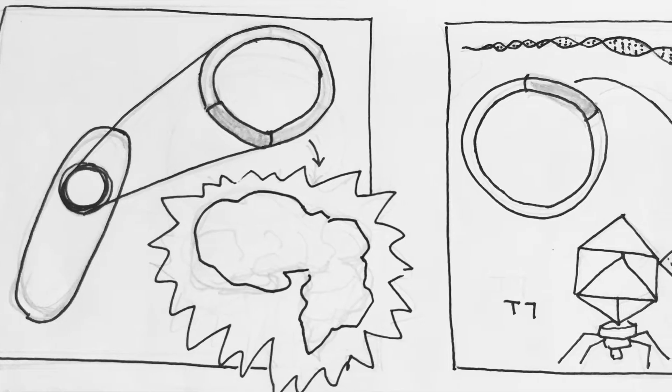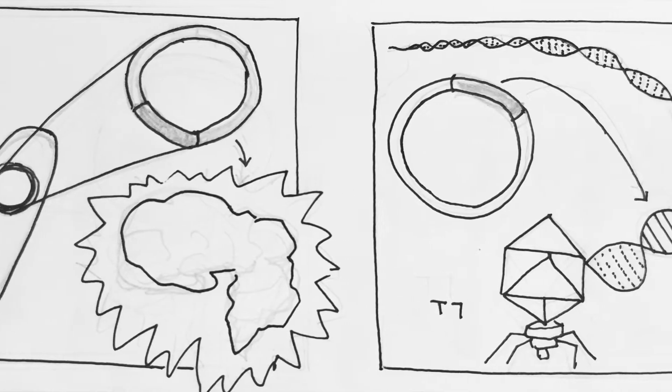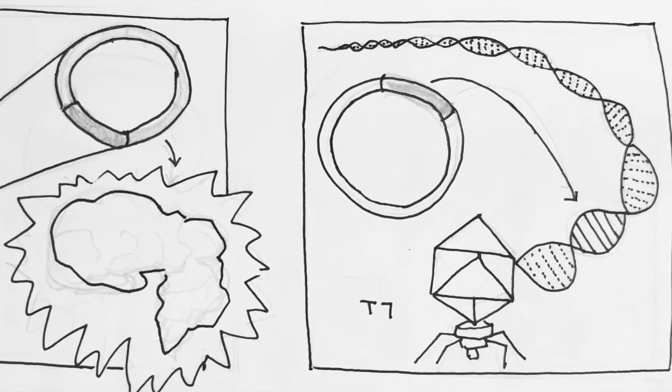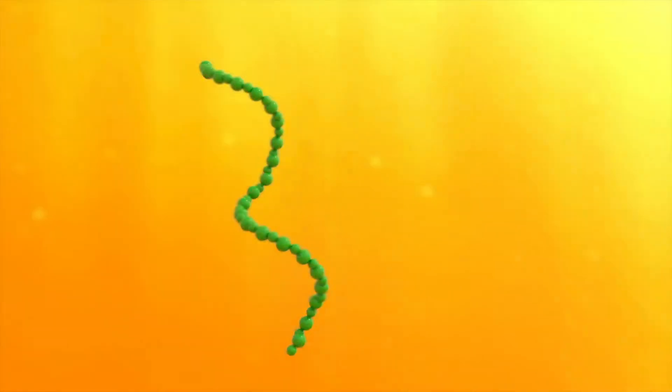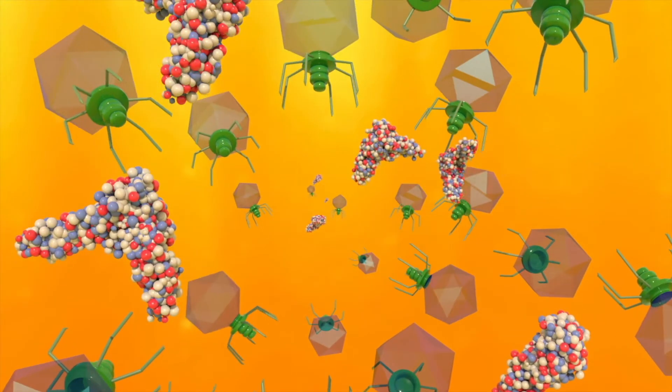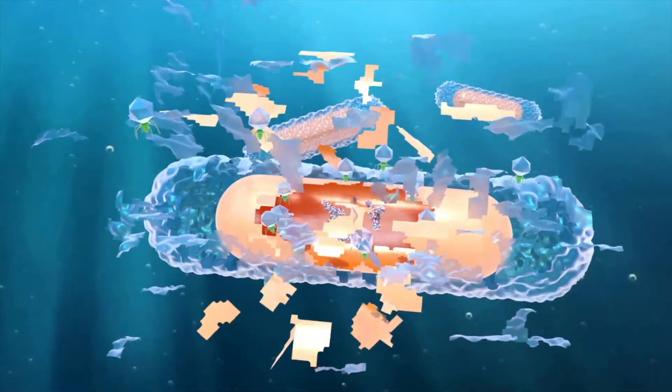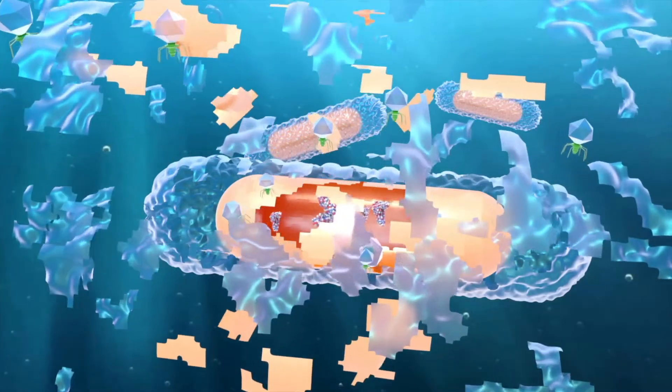Our engineered phage was then introduced to a population comprised of resistant and sensitive bacteria. As the phage infects the sensitive cells, its replication cycle now includes the production of the Colicin. This continues until the lysing event, which now releases both the phage replicates and the Colicins to the nearby cells.